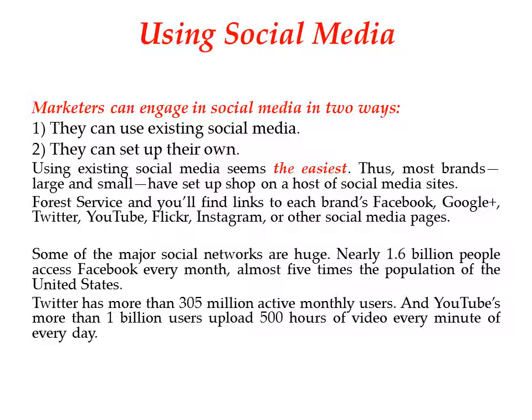When a marketer decides to use social media, they have two ways: they can use existing social media platforms, or they can set up their own. Depending on existing platforms—such as Twitter, YouTube, Instagram, Facebook, and Google Plus—represents the easiest way. Some major social networks are huge; for example, nearly 1.6 billion people access Facebook every month, showing how heavily people depend on certain platforms.